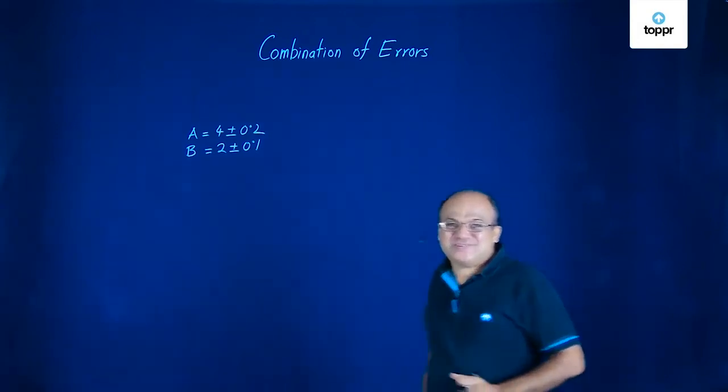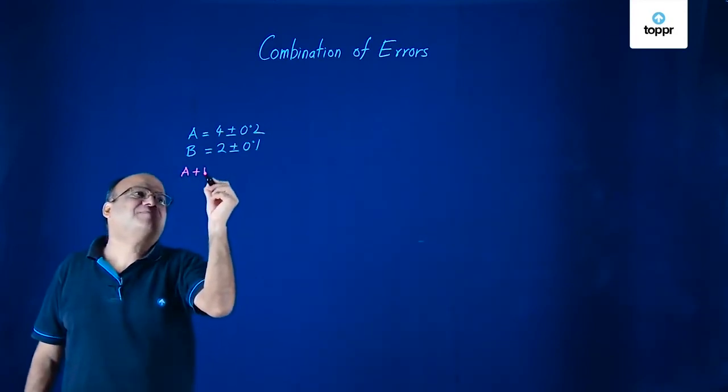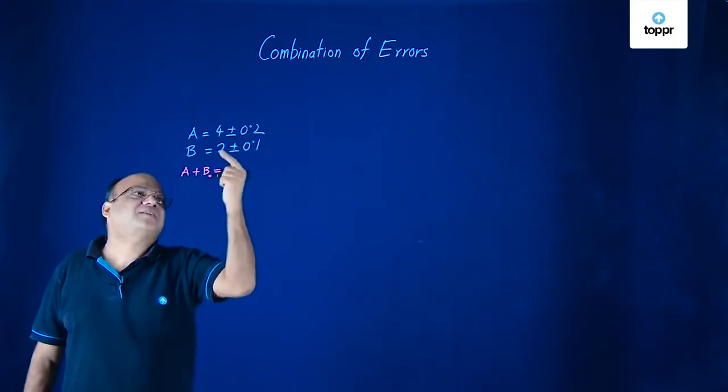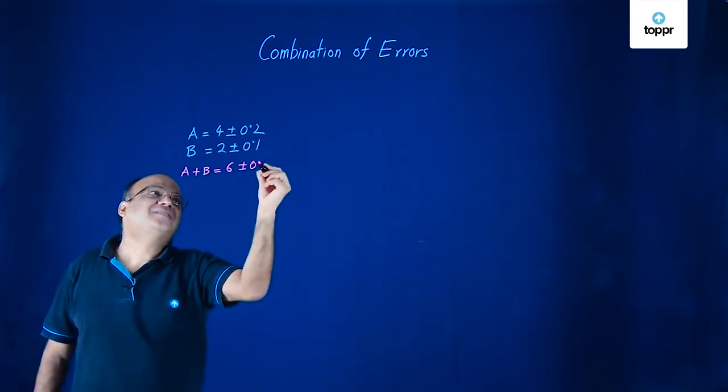Very easy, all of you can do that. So do it. What is A plus B? A plus B you add these numbers you get 6 and you add the errors you get 0.3.